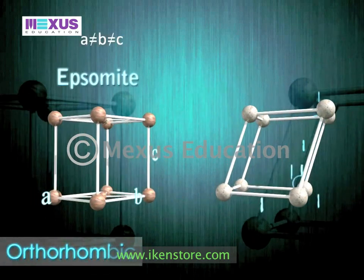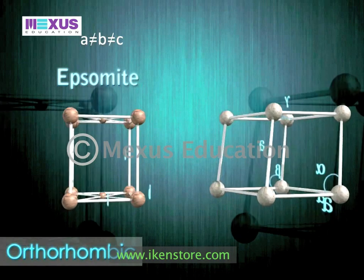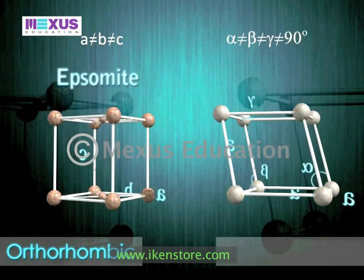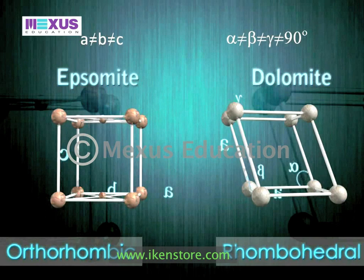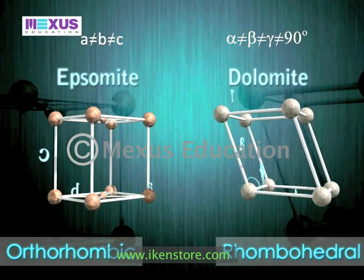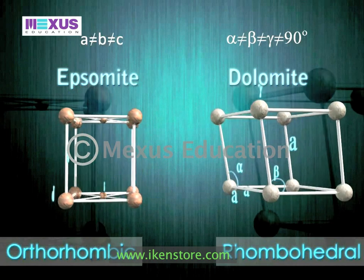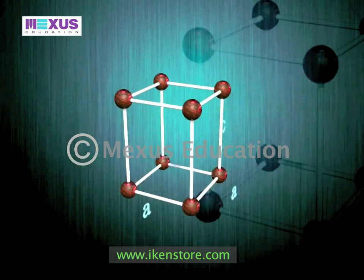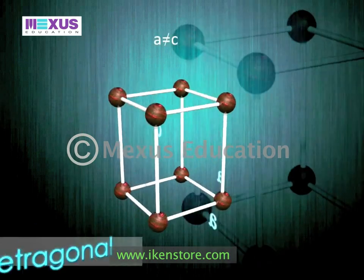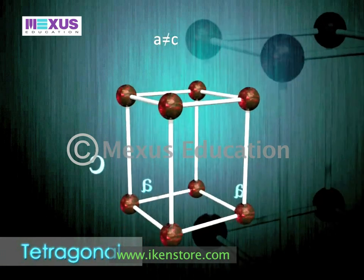The orthorhombic is another system, and epsomite is an example of it, whereas dolomite is an example of the rhombohedral system. Zircon is an example of the tetragonal lattice system.